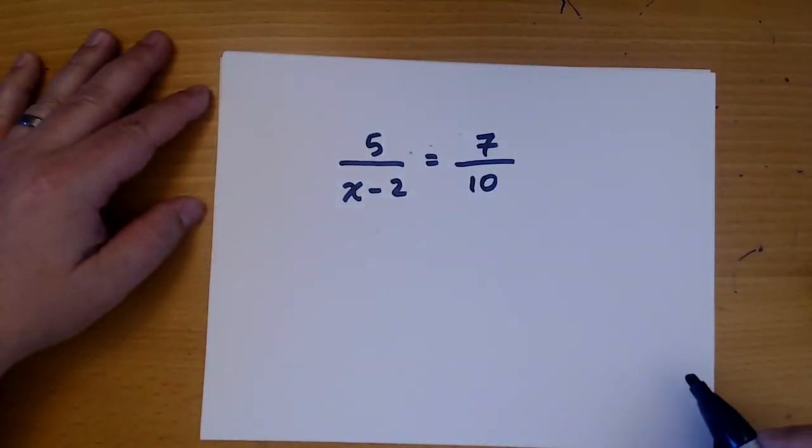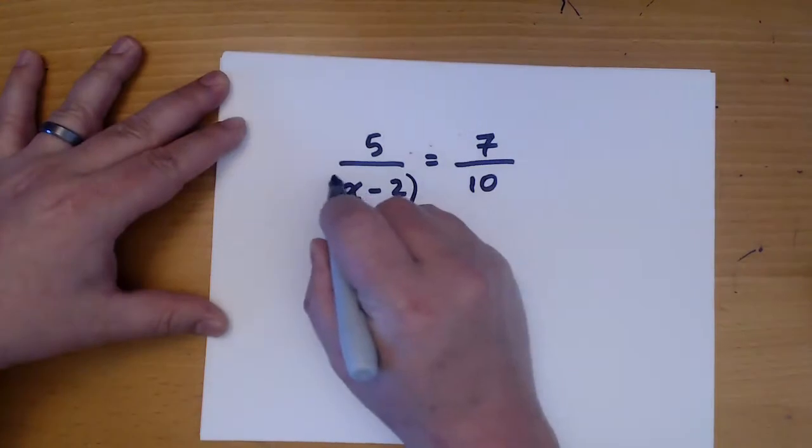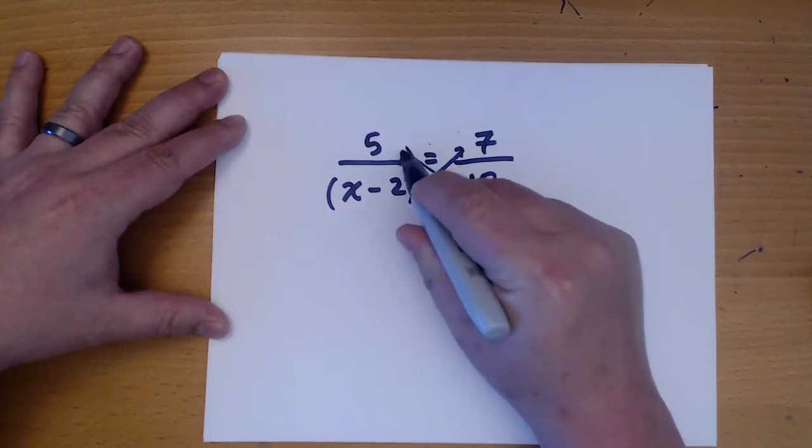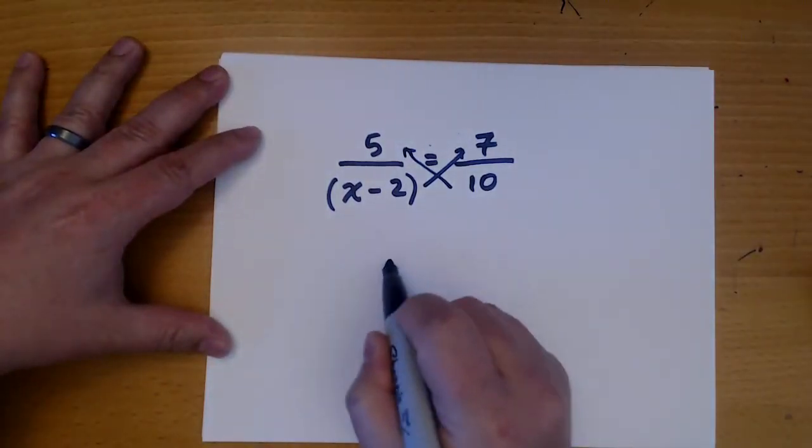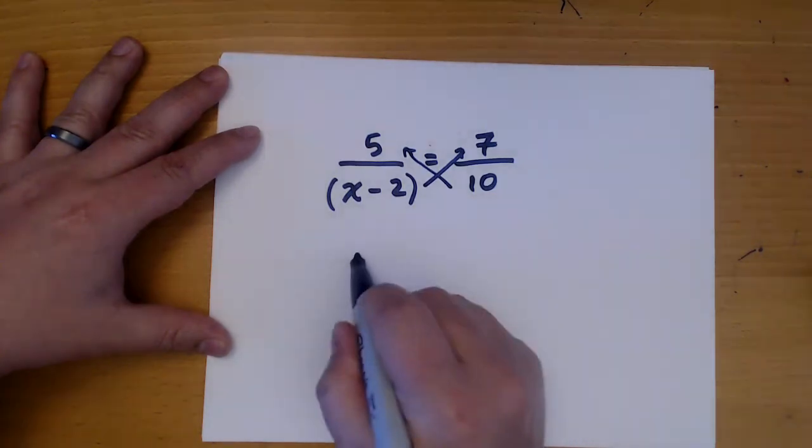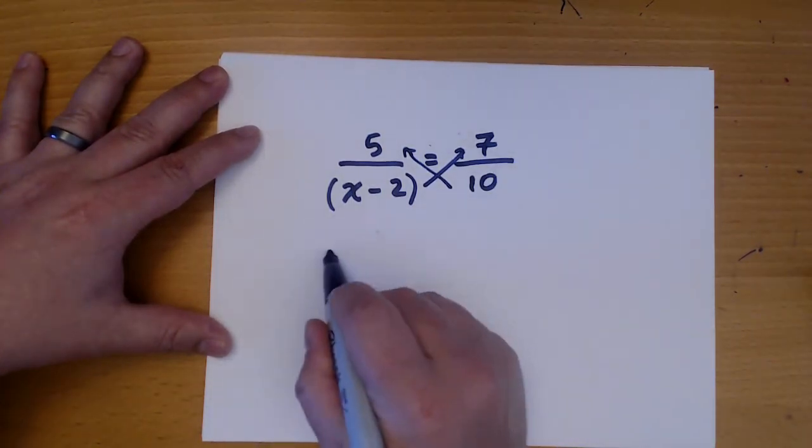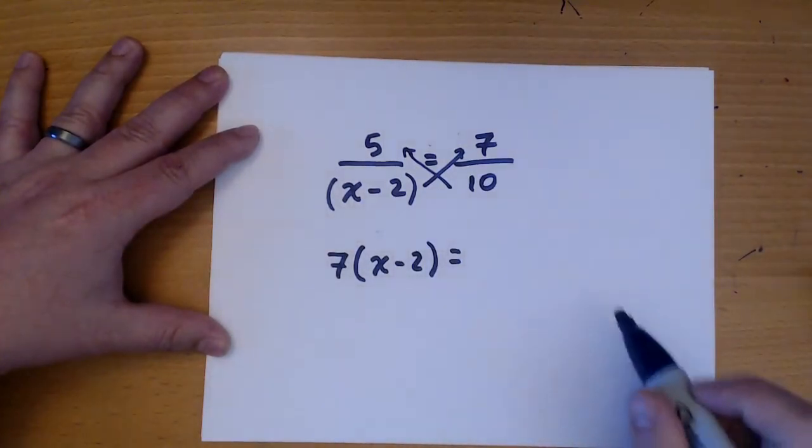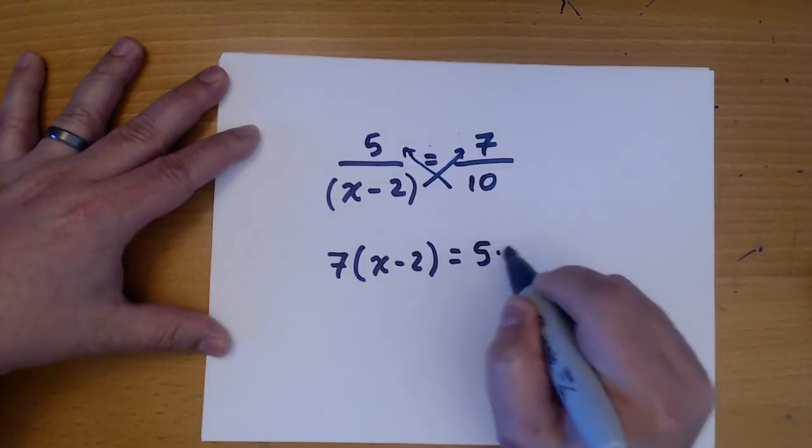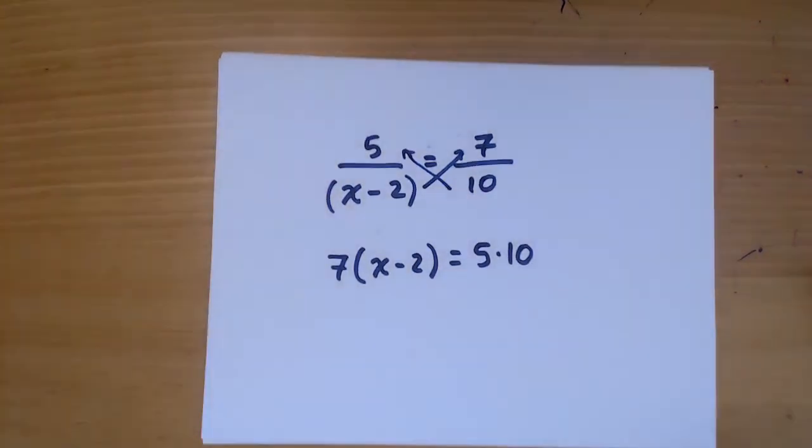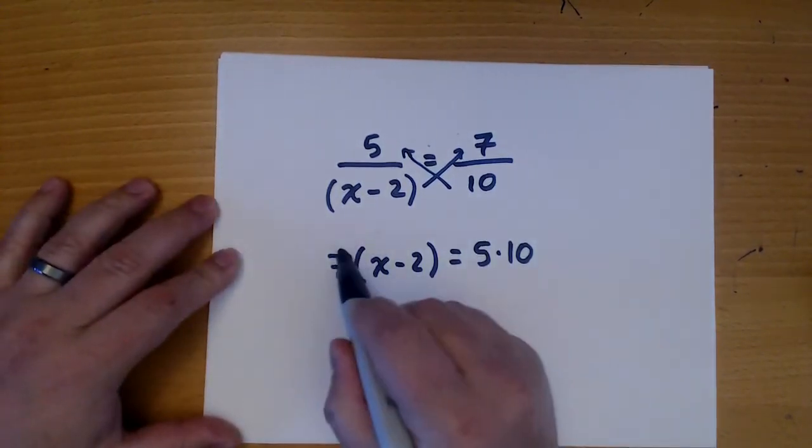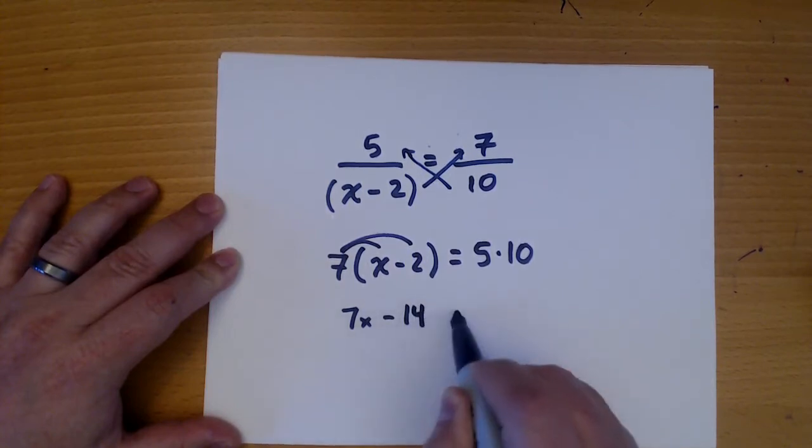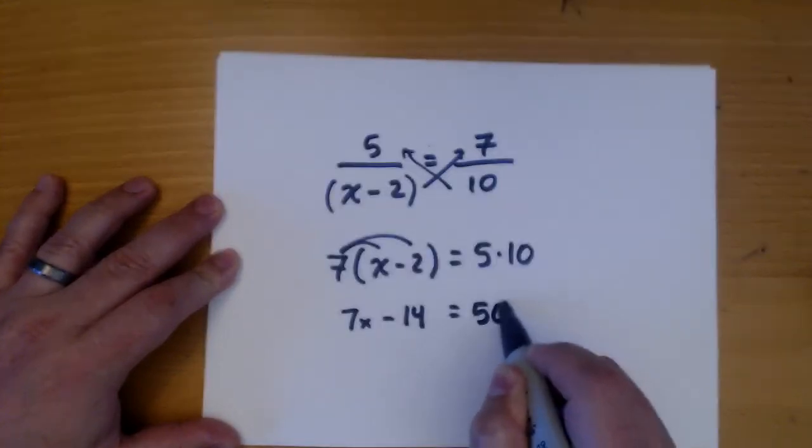Okay, so our first step is to wrap in parentheses, and then we can cross multiply. So, x minus 2 times the 7, and 5 times 10. All right. Now we distribute. And 5 times 10 is 50.